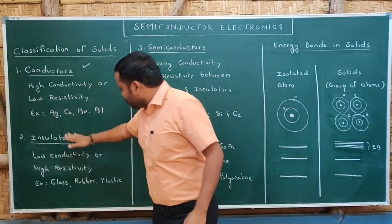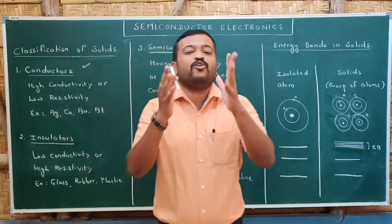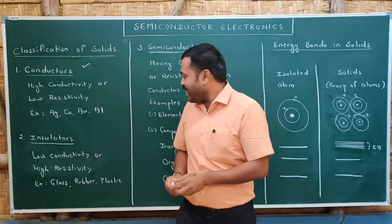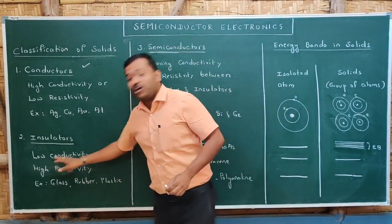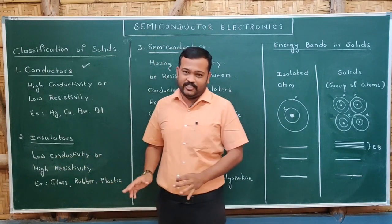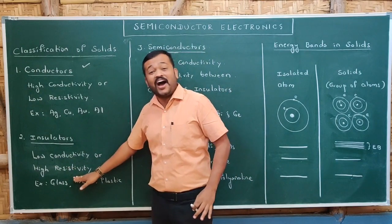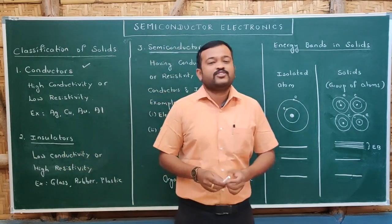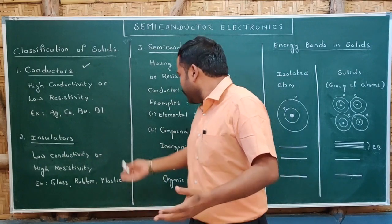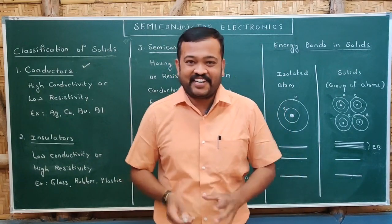Insulators are solids which do not allow current to flow through them. We can say that insulators have low conductivity and high resistivity. If a solid has low conductivity, it must have high resistivity. Examples of insulators are glass, wood, plastic, and rubber.